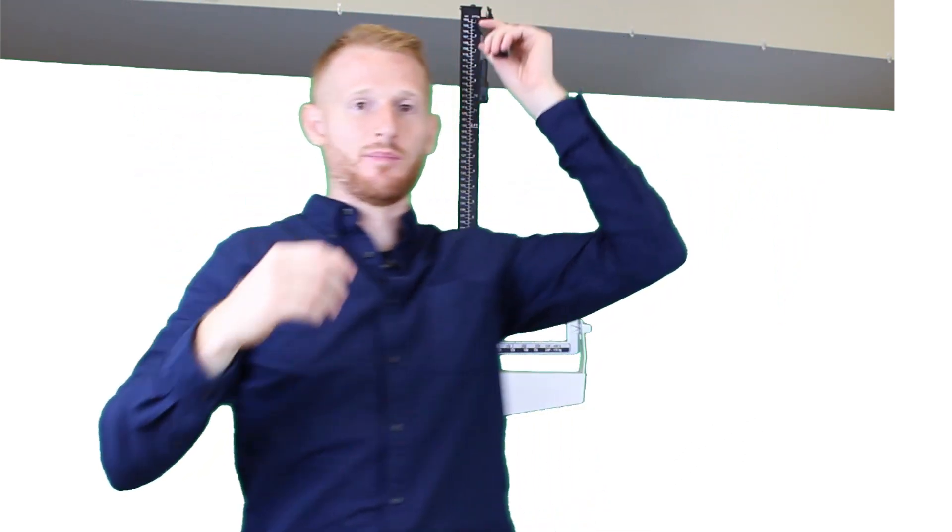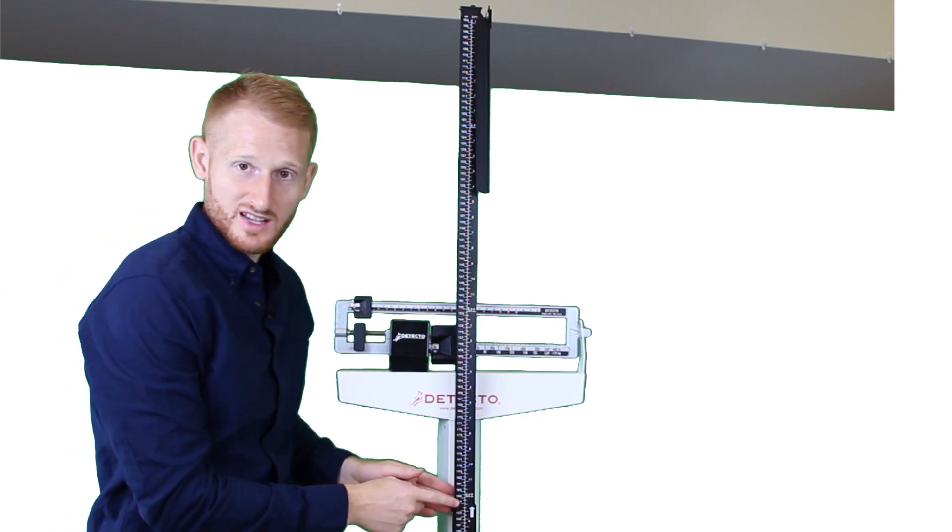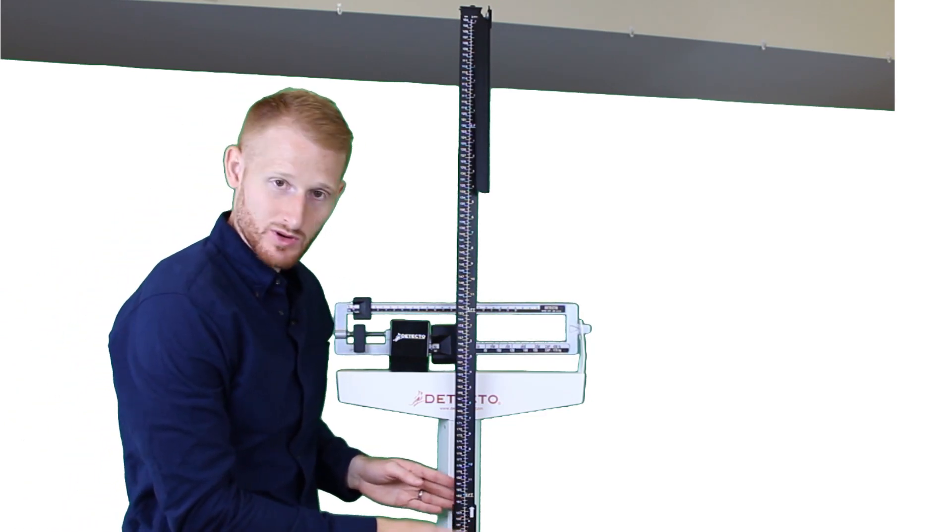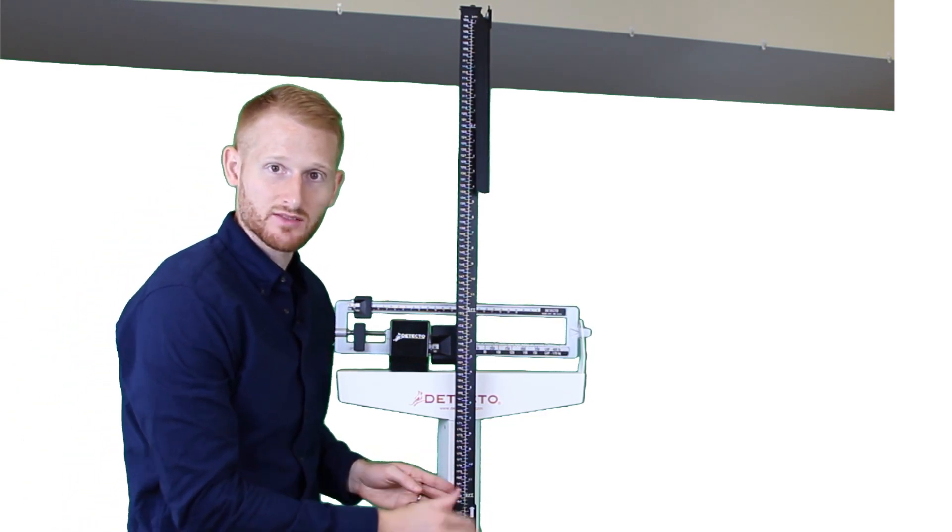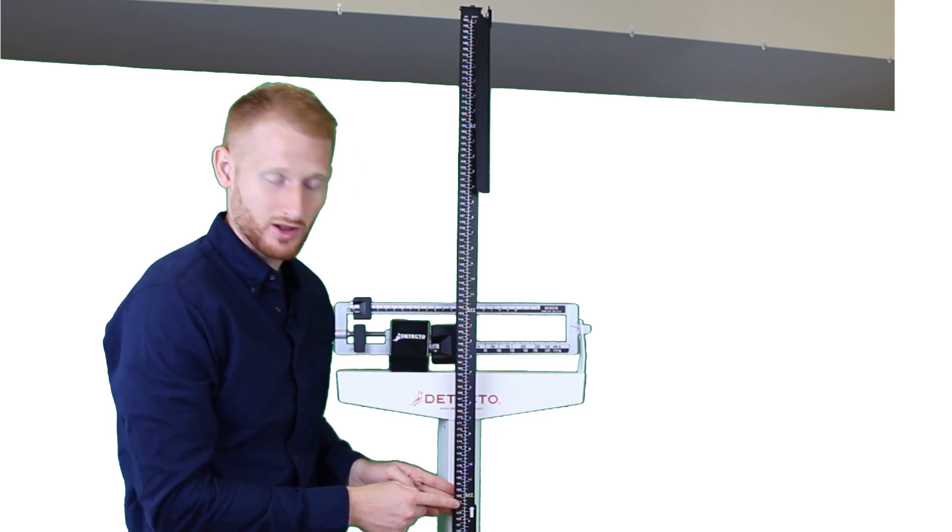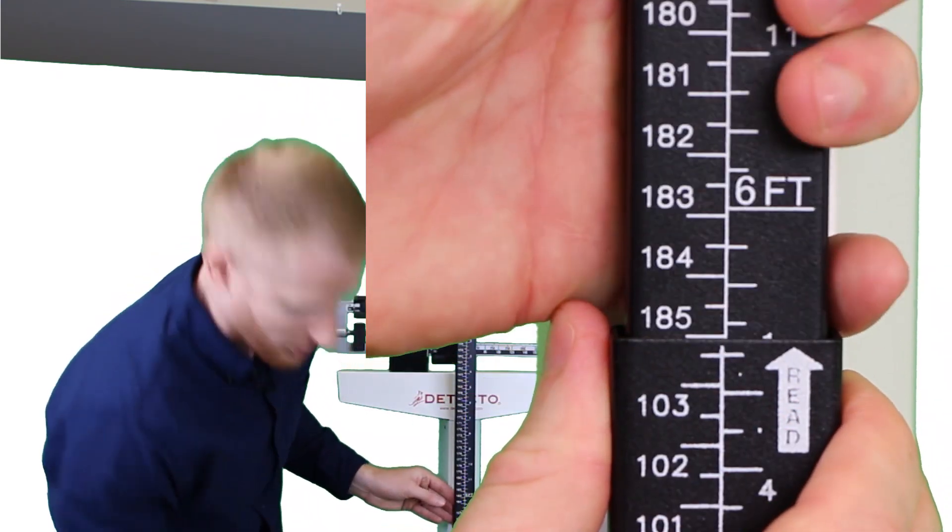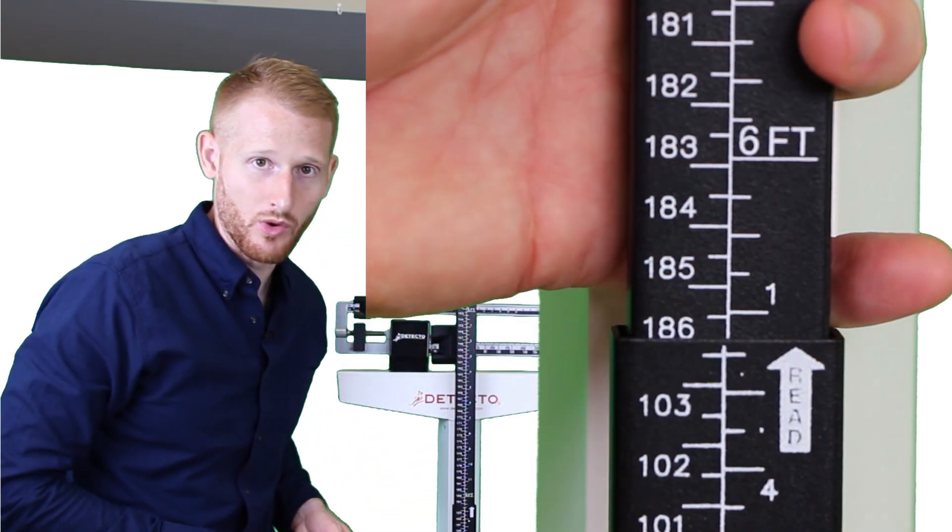Alright, so then I can step off the scale and I can read along this separation between the bottom shaft and the top shaft of the stadiometer how tall I am. And so I, with my shoes on here, am about six foot one.